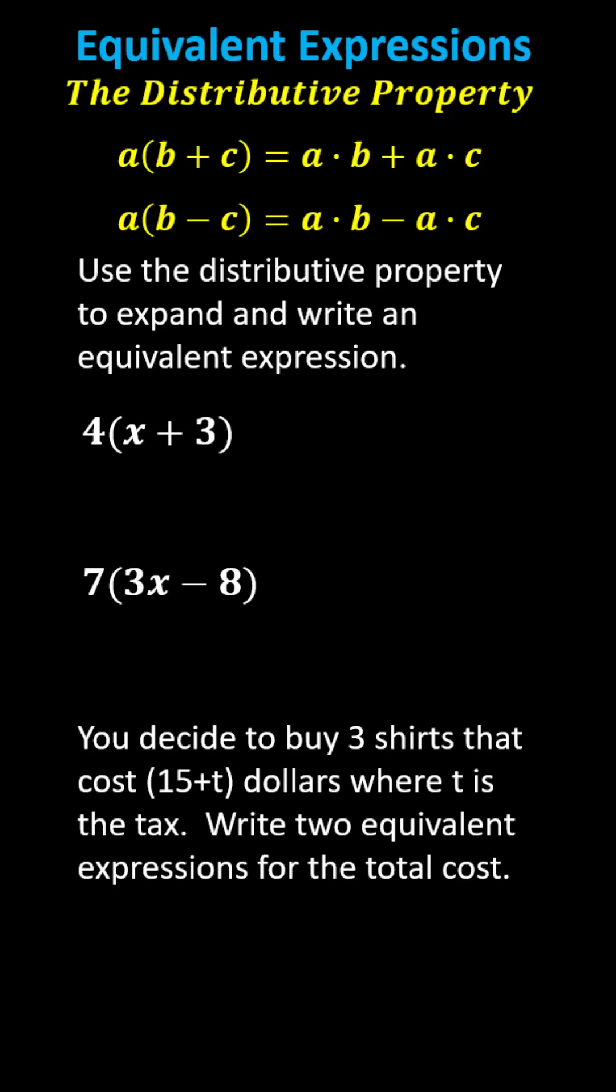The distributive property states that A times the sum of B and C is equal to A times B plus A times C. Similarly, A times the difference of B and C is equal to A times B minus A times C.